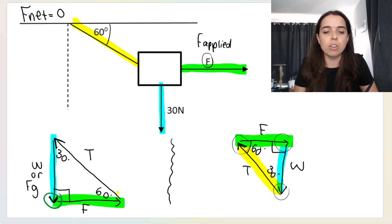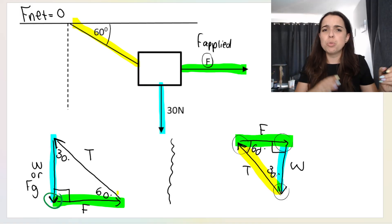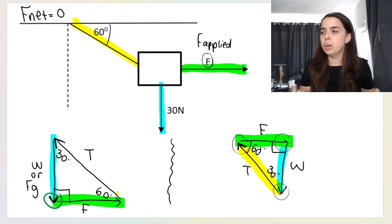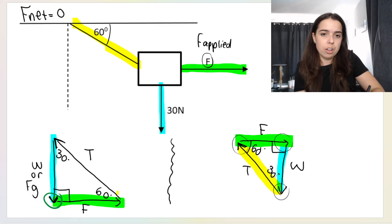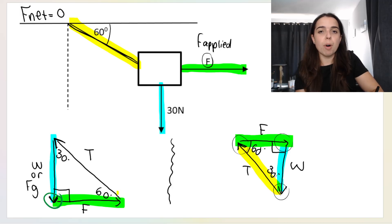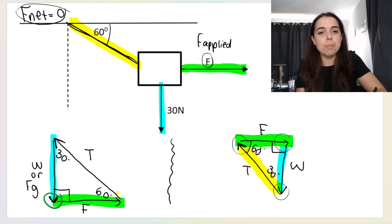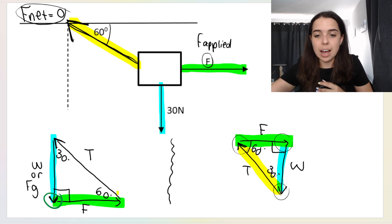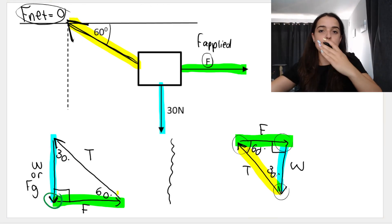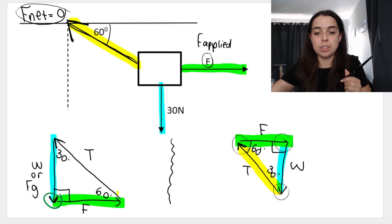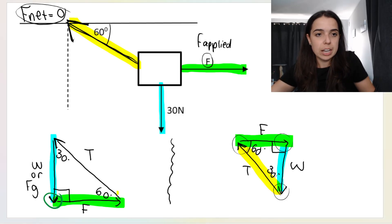This is the one where students often struggle — they ask how do you know which way the arrow points? Well, take a look at this rope. This rope is keeping the box in a stationary position where F-net is zero. This rope is essentially pulling the box up and to the left. So your arrow needs to point up and to the left. That's why on the diagram T is going up and to the left.